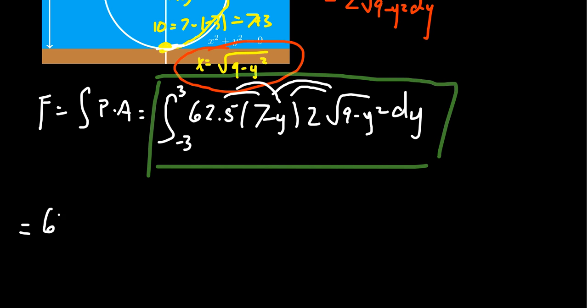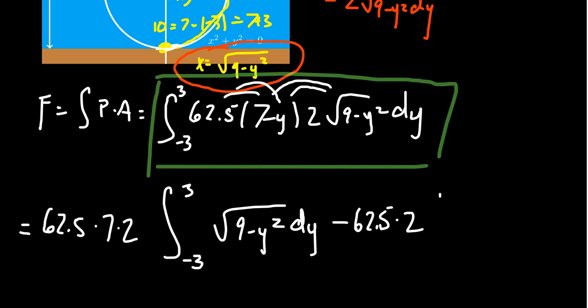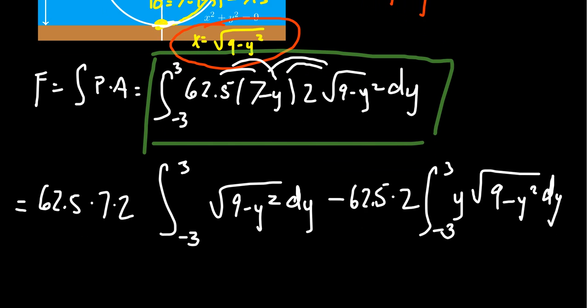When we do that, we're going to get 62.5 times 7 times 2, we'll compute that in just a moment, times the square root of 9 minus y squared dy. And then minus 62.5 times 2 times the integral from negative 3 to 3 of y times the square root of 9 minus y squared dy.